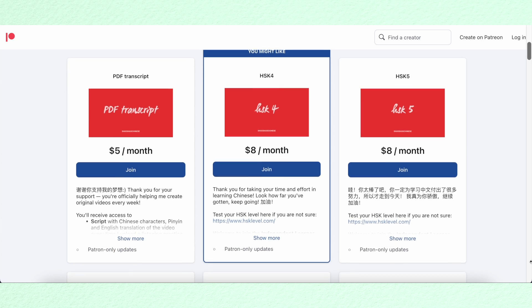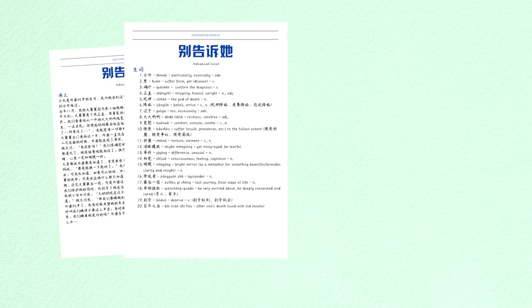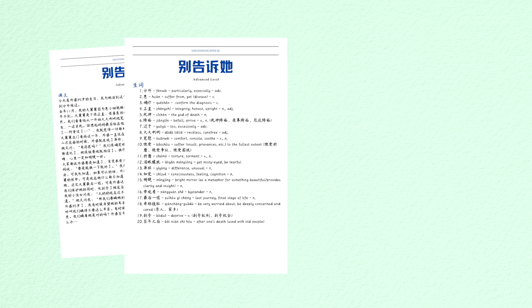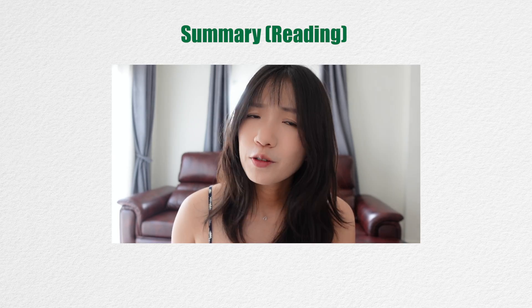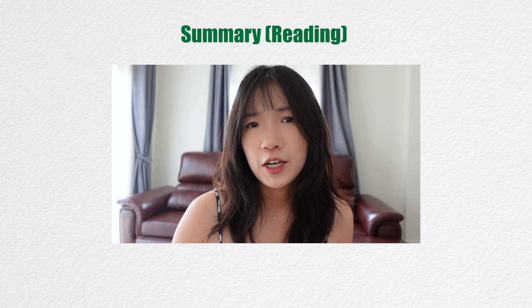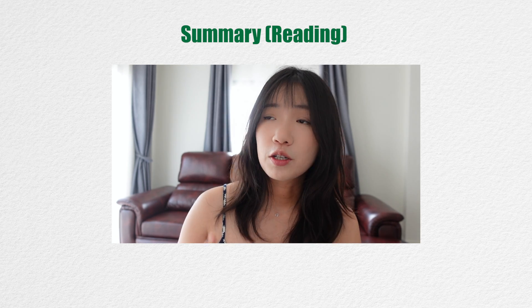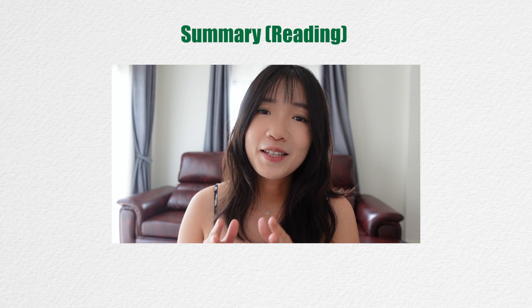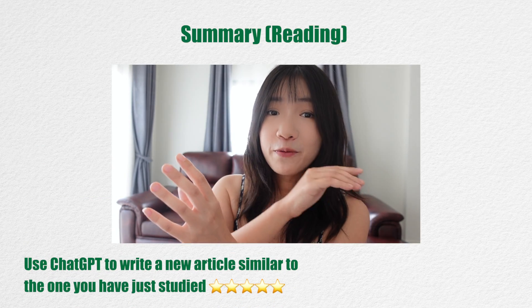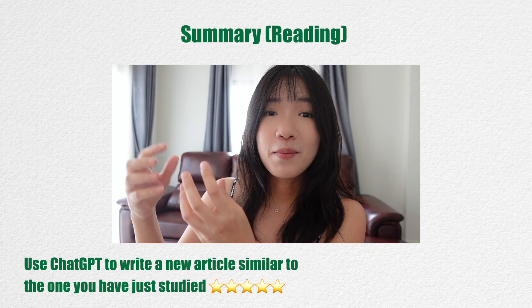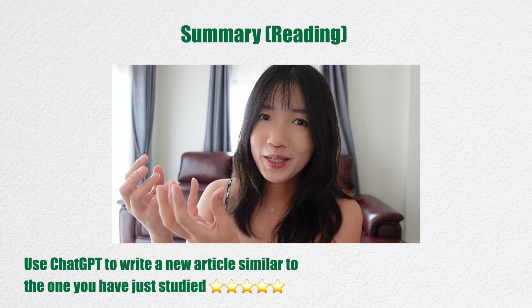You can choose different learning tiers based on your level. The topics are closely related to daily life but also quite deep — like what Chinese people do when a loved one is diagnosed with a serious illness, or a Chinese person's mental journey after moving to Europe. I also share some personal stories. If you're interested, click the link in the description. For reading, I wouldn't ask ChatGPT to generate stories or articles if I've reached HSK 4 or above. But it's a great idea to give ChatGPT an article I've already learned and ask it to generate a similar one so I can practice reading and vocabulary.